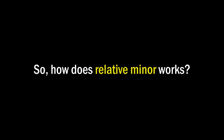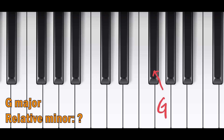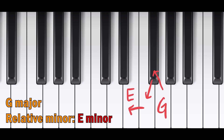How do we find the relative minor from the relative major? It's actually really simple. Let's say I am in G major — to find its relative minor, all you need to do is count three semitones downwards to the left from G major. And there we go: the relative minor of G major is E minor.